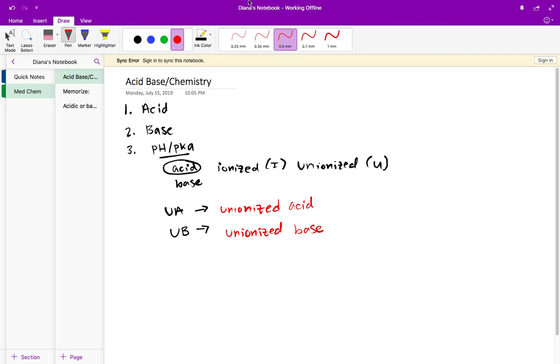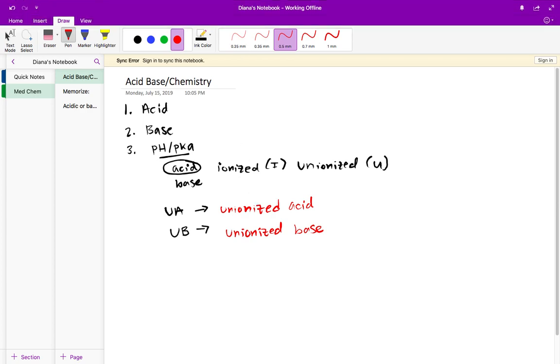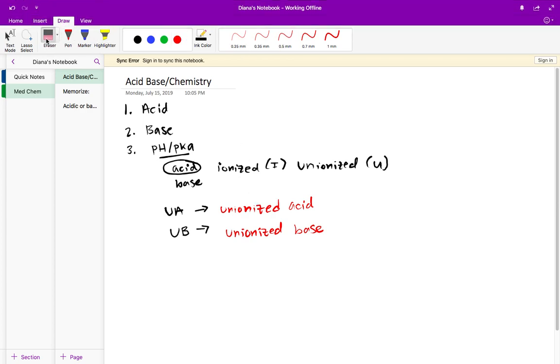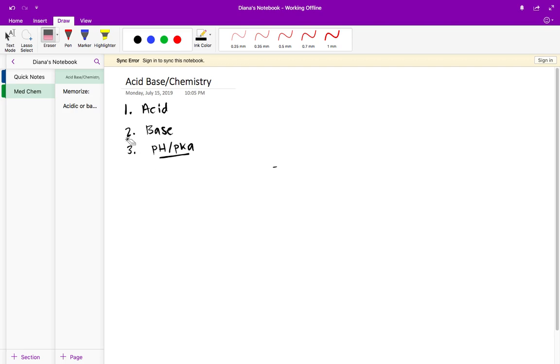And then if I put IA or IB then it's going to be ionized acid and ionized base. So let's start with the first topic which is what is an acid.